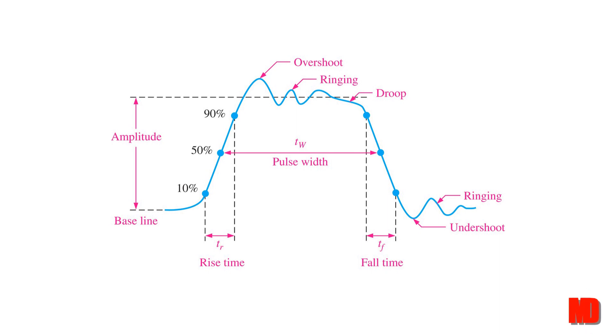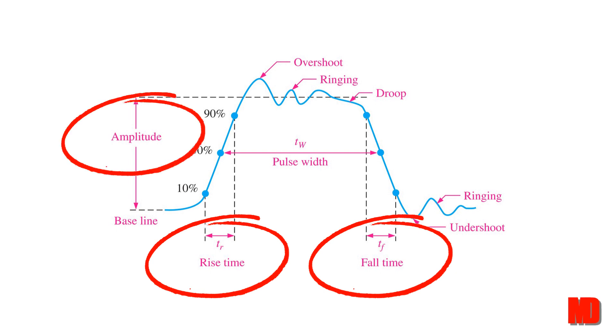The droop can come from stray capacitive and circuit resistance, usually from an RC circuit that has a low time constant. The most important characteristics are the rise and fall times, the amplitude, and the pulse width.